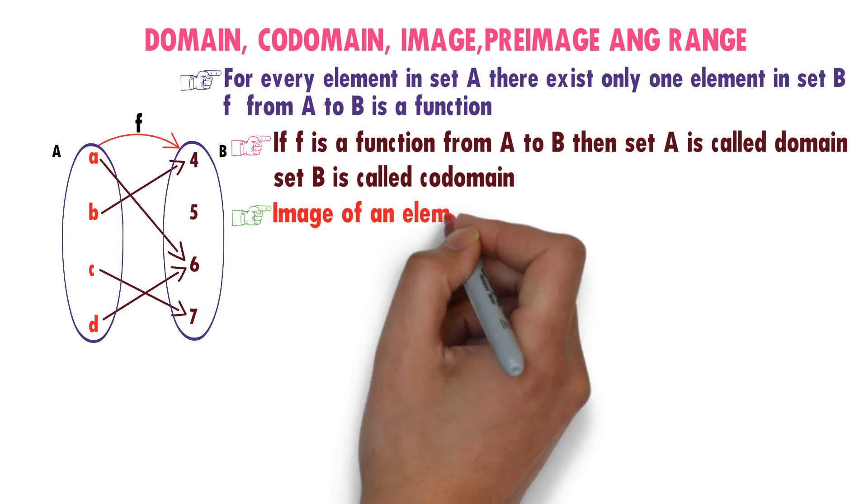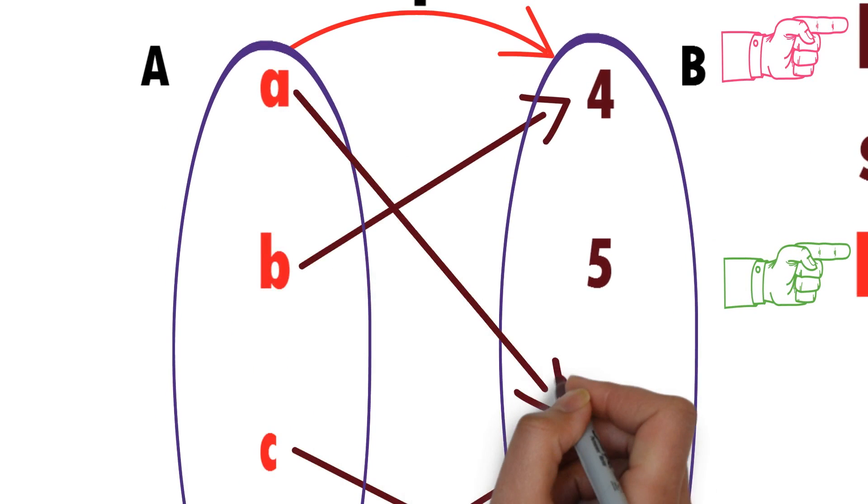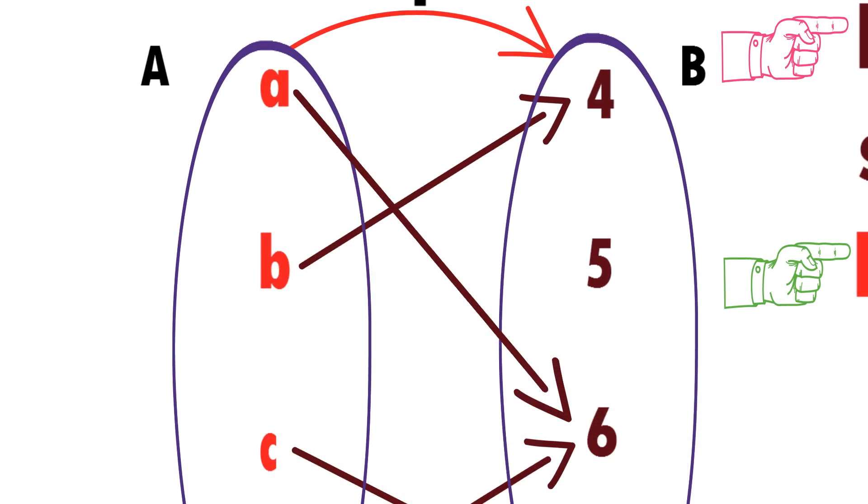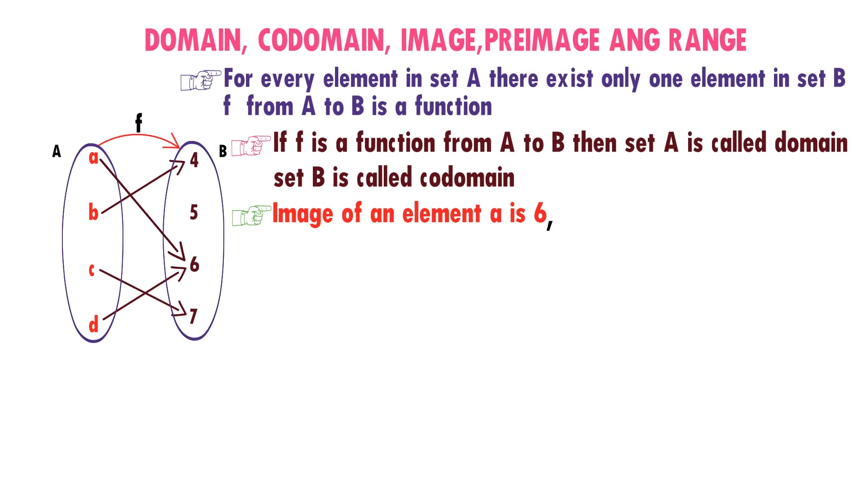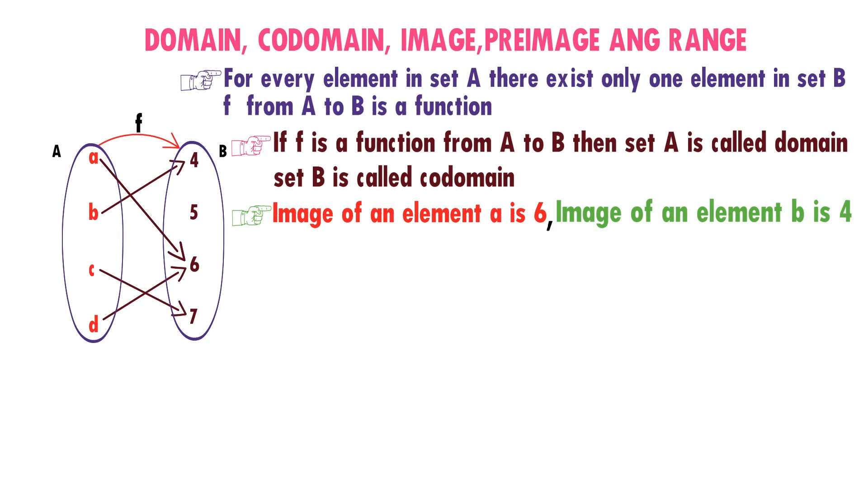Image. Image of an element a is 6. Observe here. A is related to 6. That's why we say image of a is 6. Similarly, observe the diagram. Image of an element b is what? 4.